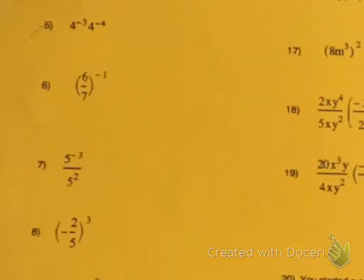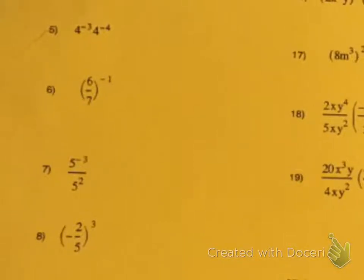On number 5, we're multiplying again, so we're adding. Our base stays 4, and negative 3 plus negative 4 is negative 7. So we have to use another one of our rules: when you have a negative exponent, you have to take the reciprocal and make the exponent positive. So you move all of this down, and it becomes 1 over 4 to the positive 7.